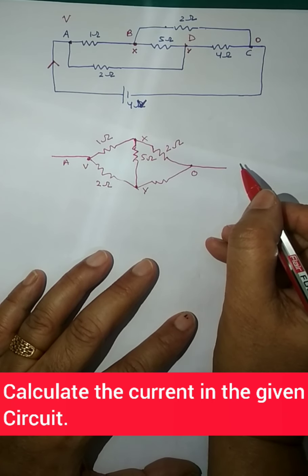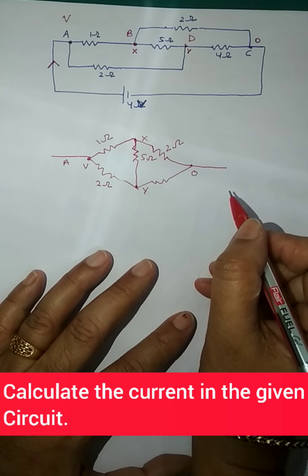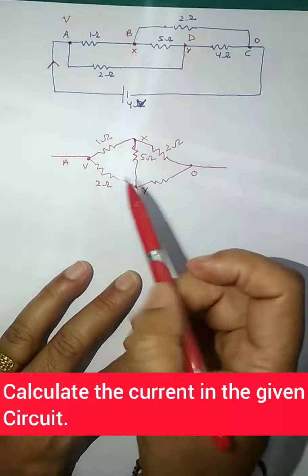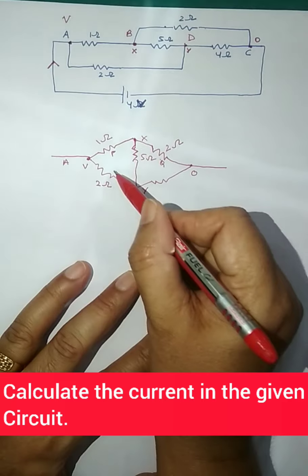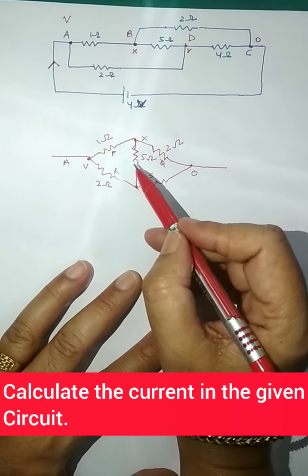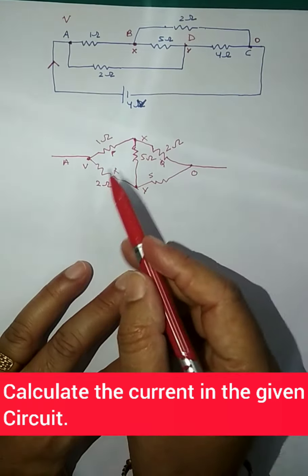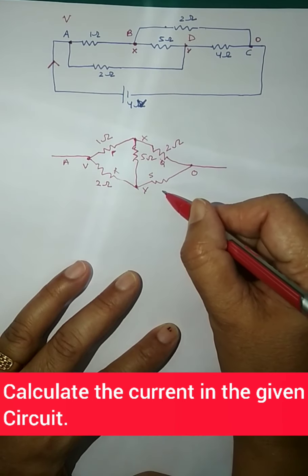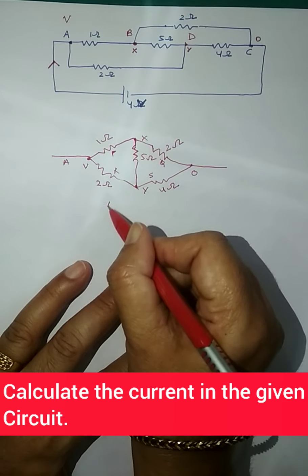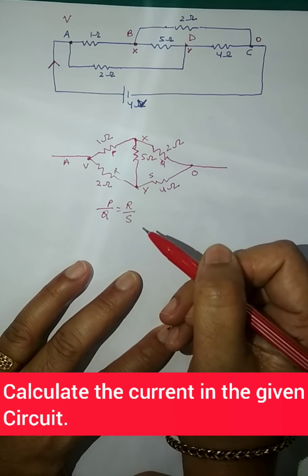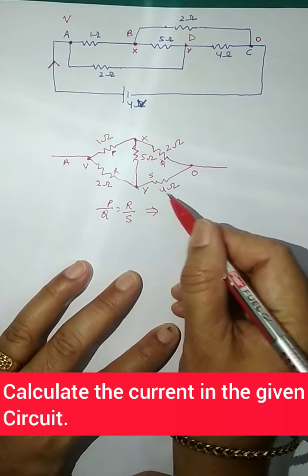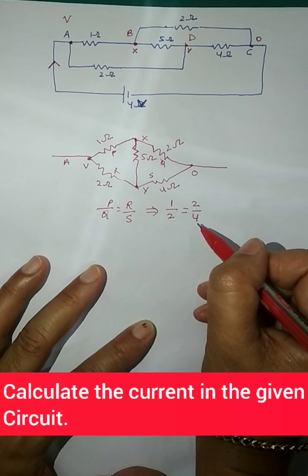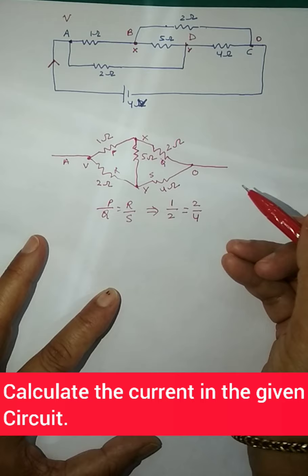So you can see how my circuit, which didn't look like a Wheatstone bridge from any angle, has now reduced to a Wheatstone bridge. We label the arms P, Q, R, and S. The condition for balance is P/Q = R/S. Here P = 1, Q = 2, R = 2, S = 4 — so 1/2 = 2/4, which means half equals half. The Wheatstone bridge is balanced.